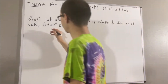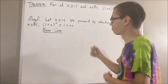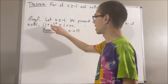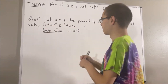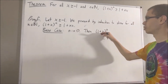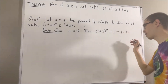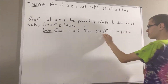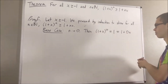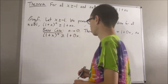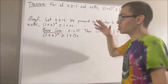So, let's start with the base case. In the base case, we want to prove that this is true in the case where n is equal to 0. So, we want to show that 1 plus x to the power of 0 is greater than or equal to 1 plus 0x. Starting with the left-hand side, we know that any real number to the power of 0 is equal to 1, and 1 equals 1 plus 0 times x. So we have shown that this is true in the case where n is equal to 0. This completes the base case.